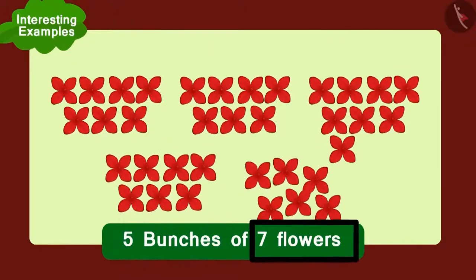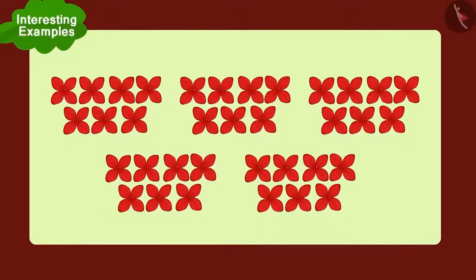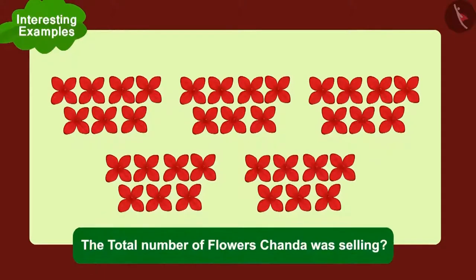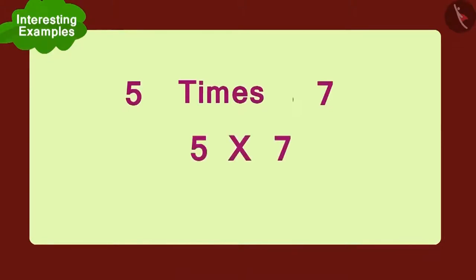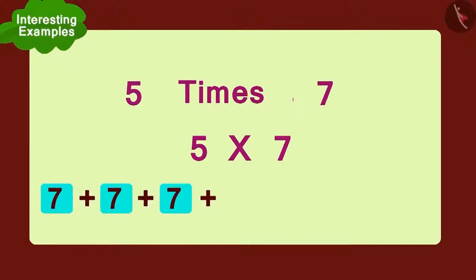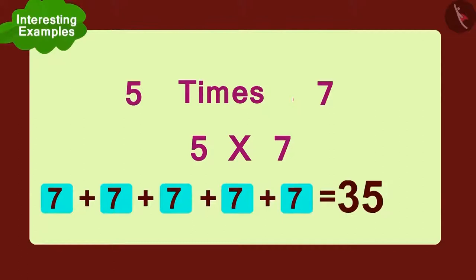At the same time, Chanda was selling five bunches of seven flowers each. Children, can you tell the total number of flowers Chanda was selling? Five times seven, or five multiplied with seven. Using the addition method: seven added to seven, again add seven, again add seven, and finally add one more seven. The total number of flowers is thirty-five.